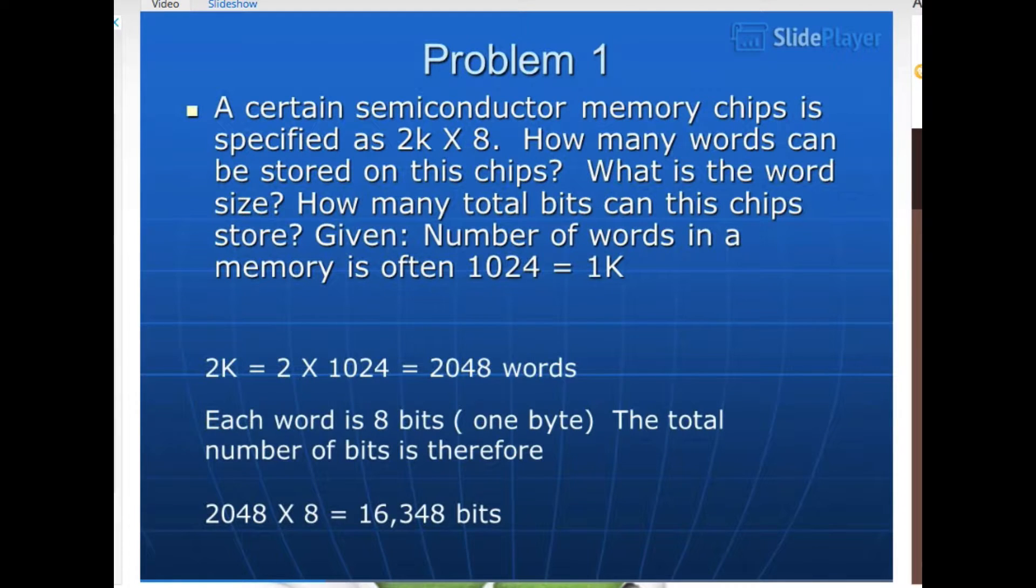Problem 1. A certain semiconductor memory chip is specified as 2K by 8. How many words can be stored on this chip? What is the word size? How many total bits can this chip store? Given, number of words in a memory, 1024 equals 1K. 2K equals 2 by 1024 equals 2048 words. Each word is 8 bits. The total number of bits is therefore 2048 by 8 equals 16,384 bits.